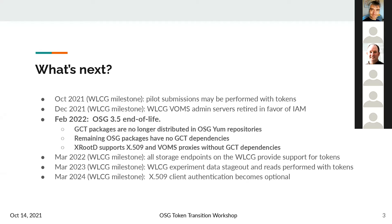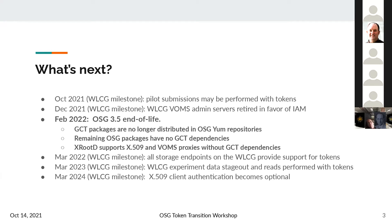The remaining OSG packages shipped in OSG 3.6 and in the future will have no GCT dependencies — this includes things like Condor. XRootD itself will continue to support X509 and VOMS proxies without any Grid Community Toolkit dependencies because it has its own implementations. Shortly after March 2022, all WLCG storage endpoints will need to provide token support, and in March 2023 WLCG experiments will move to data stage-out and reads performed with tokens. For WLCG sites in March 2024, X509 client auth becomes fully optional.